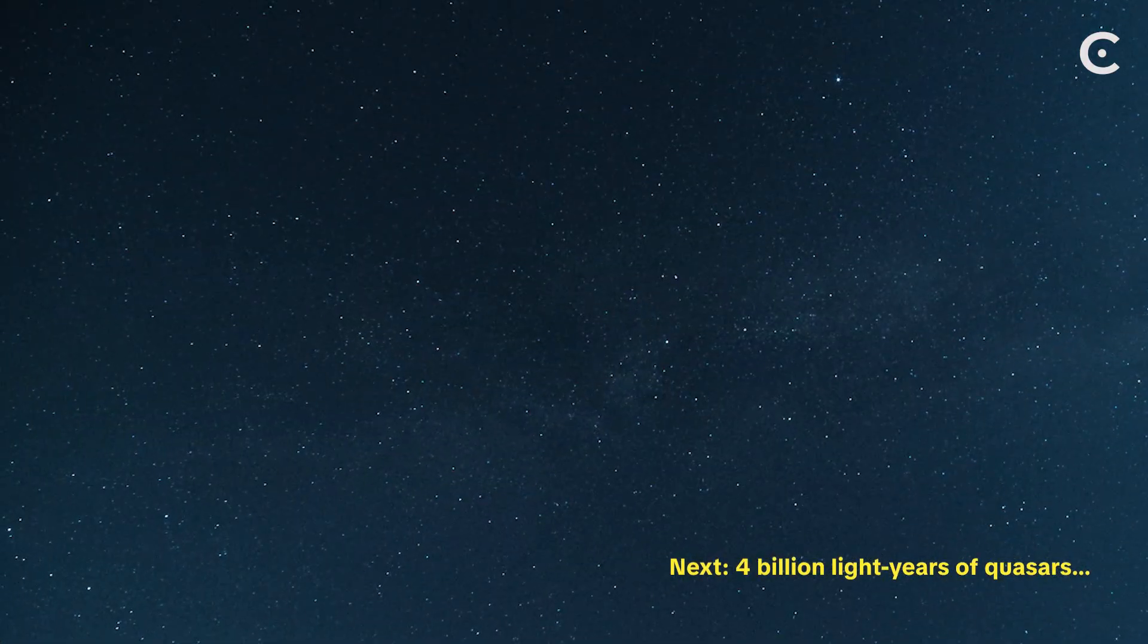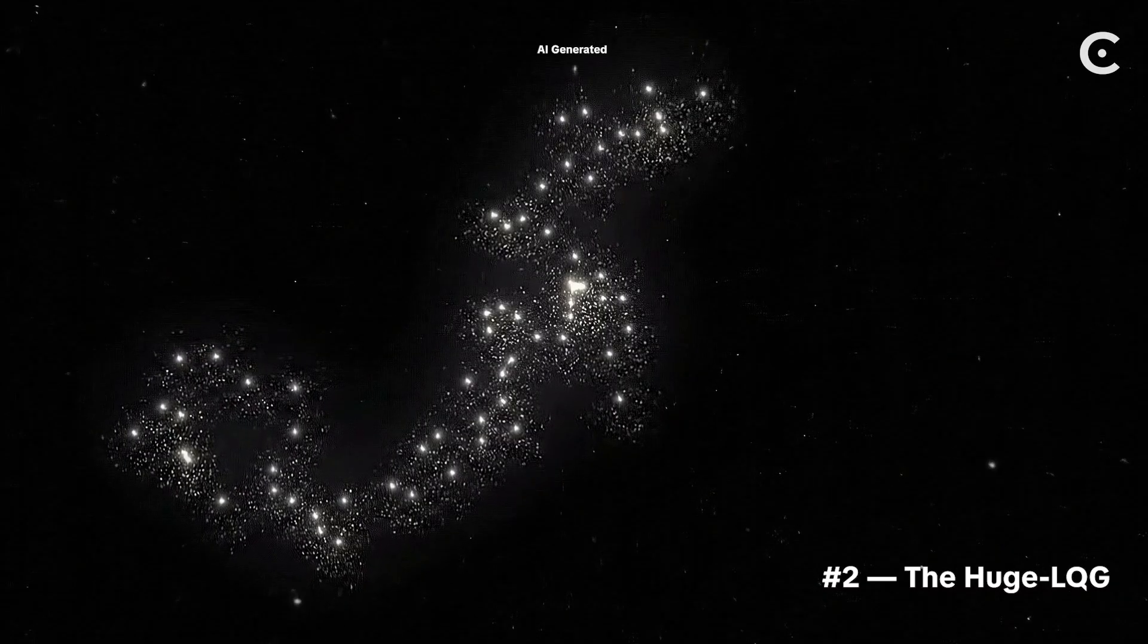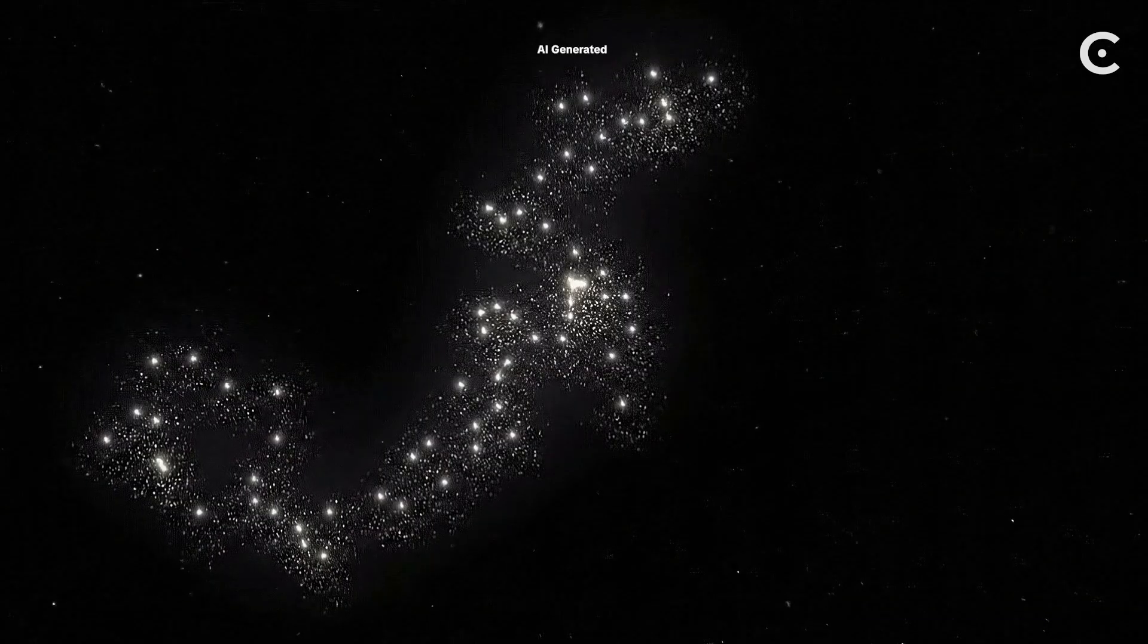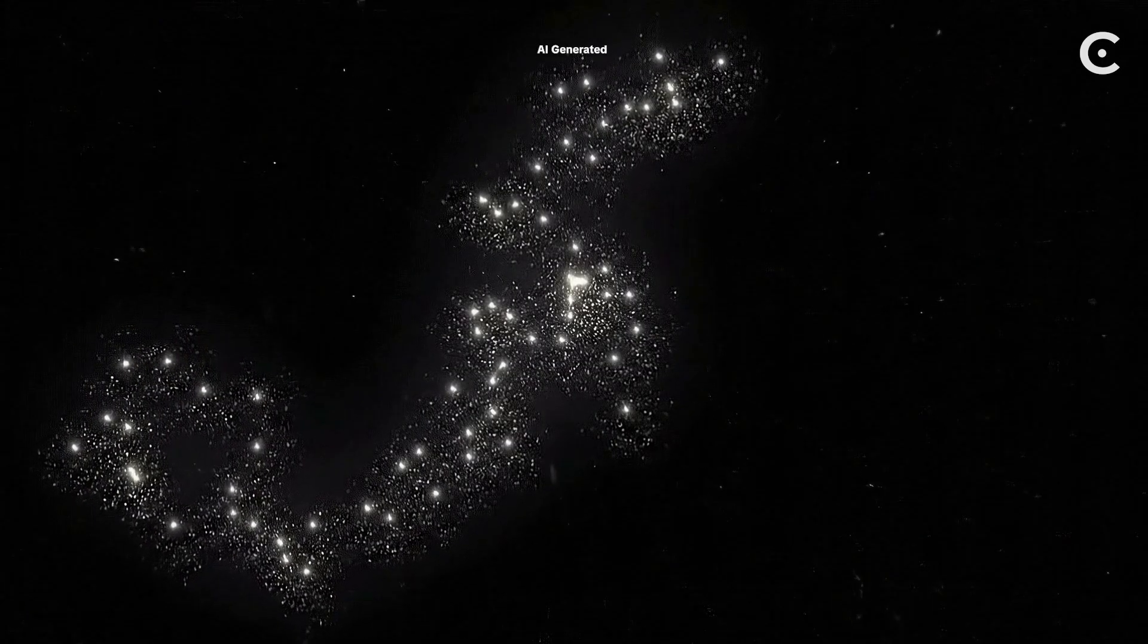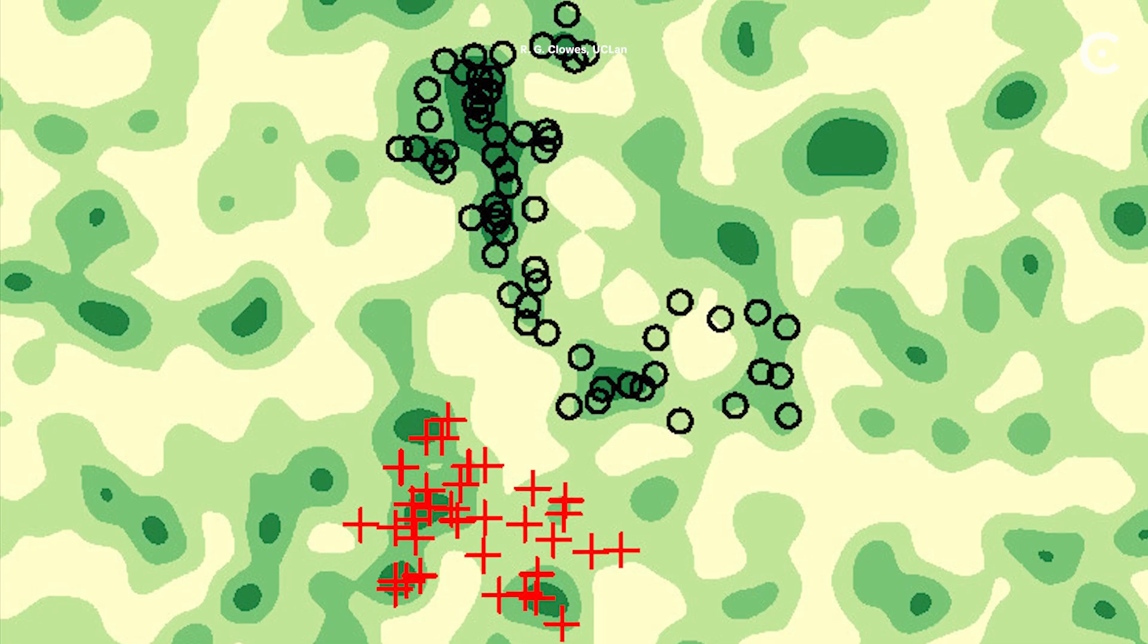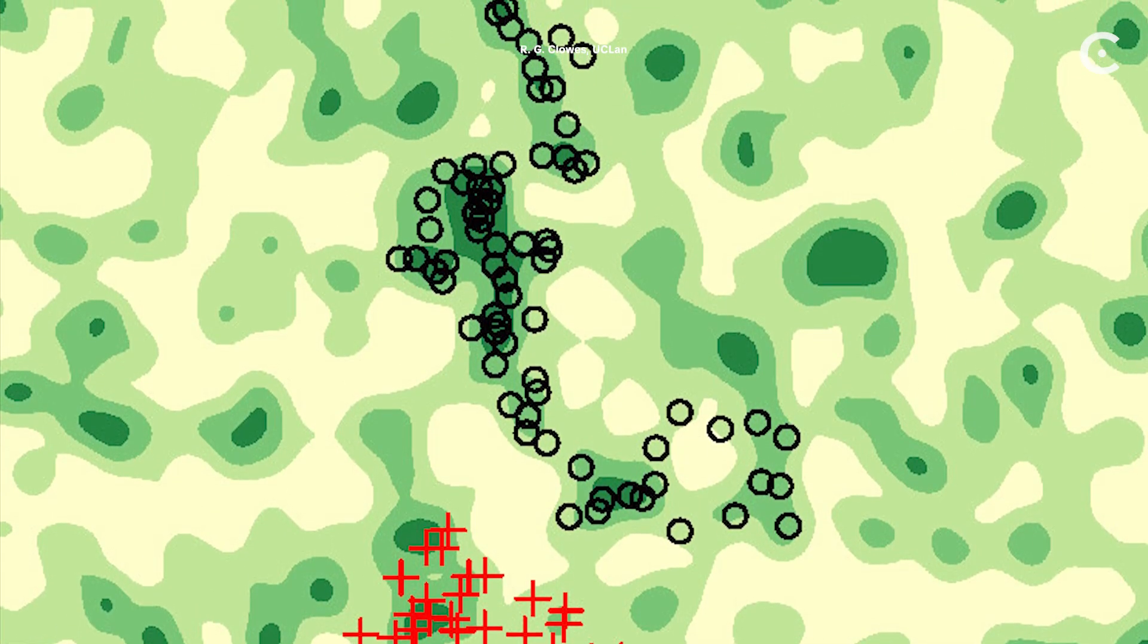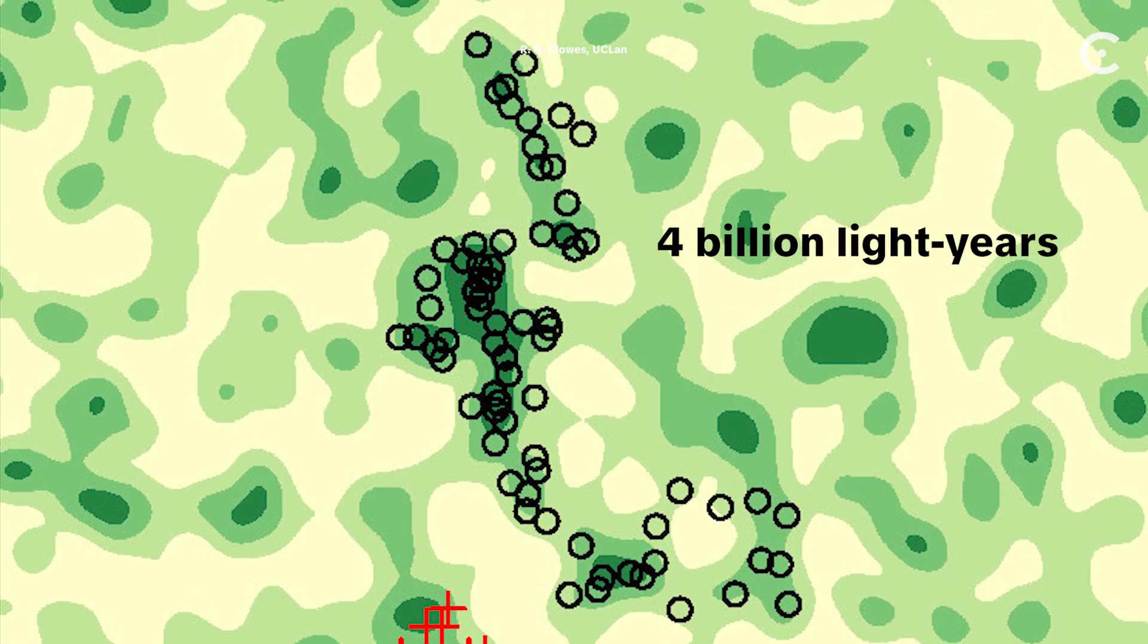But honestly, compared to what's coming next, the Sloan Great Wall is just the appetizer. Alright, brace yourself. This one has a ridiculous name. And I love it. It's called the Huge Large Quasar Group. Yes, that's the actual scientific name. Huge LQG for short. Discovered in 2013, this structure is a collection of 73 quasars. Those insanely bright cores of ancient galaxies powered by supermassive black holes, clustered together across 4 billion light years of space.